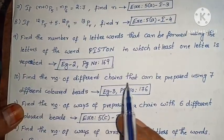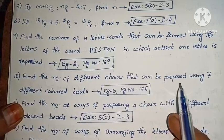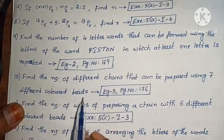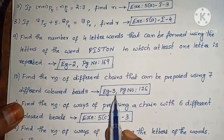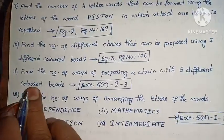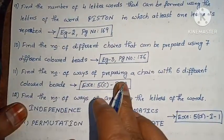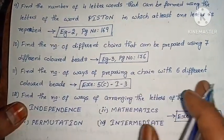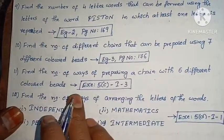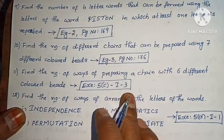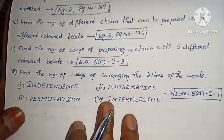Next: find the number of different chains that can be prepared using 7 different colored beads (Example 3, page 176). Next: find the number of ways of preparing a chain with 6 different colored beads (Exercise 5, Roman I, third one).